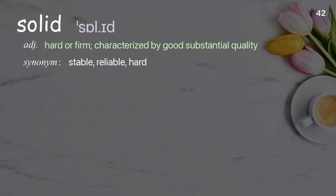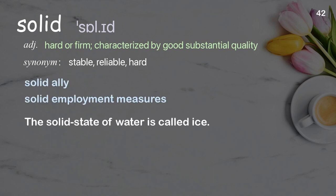Solid: hard or firm; characterized by good, substantial quality. Examples: solid ally, solid employment measures. The solid state of water is called ice.